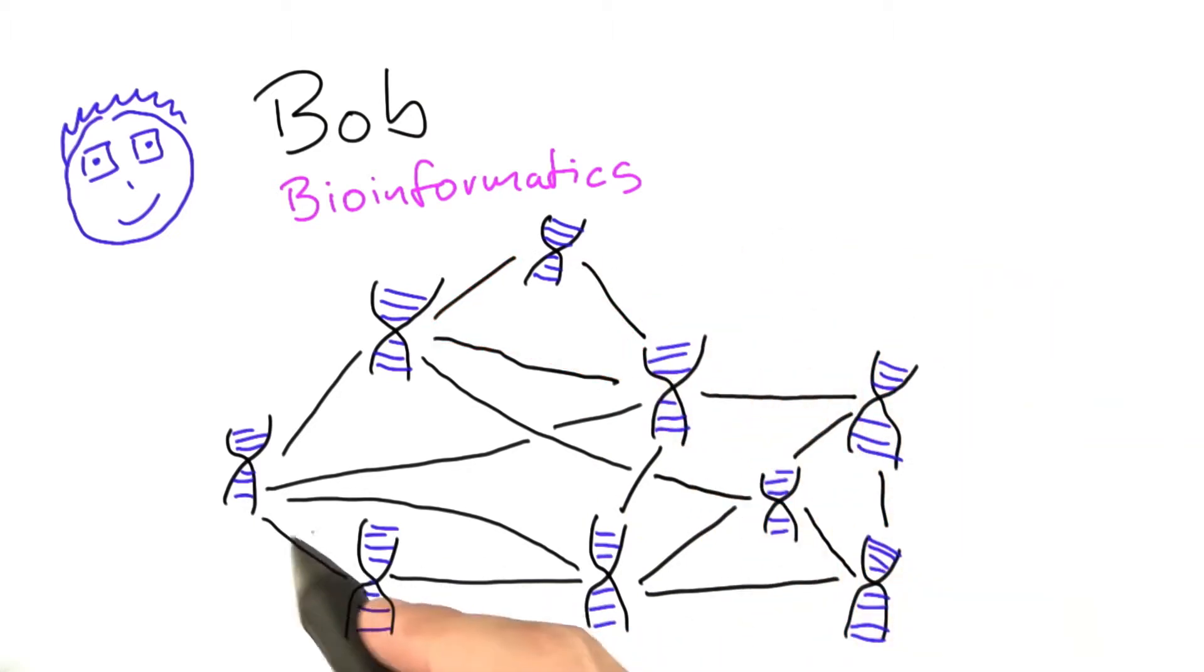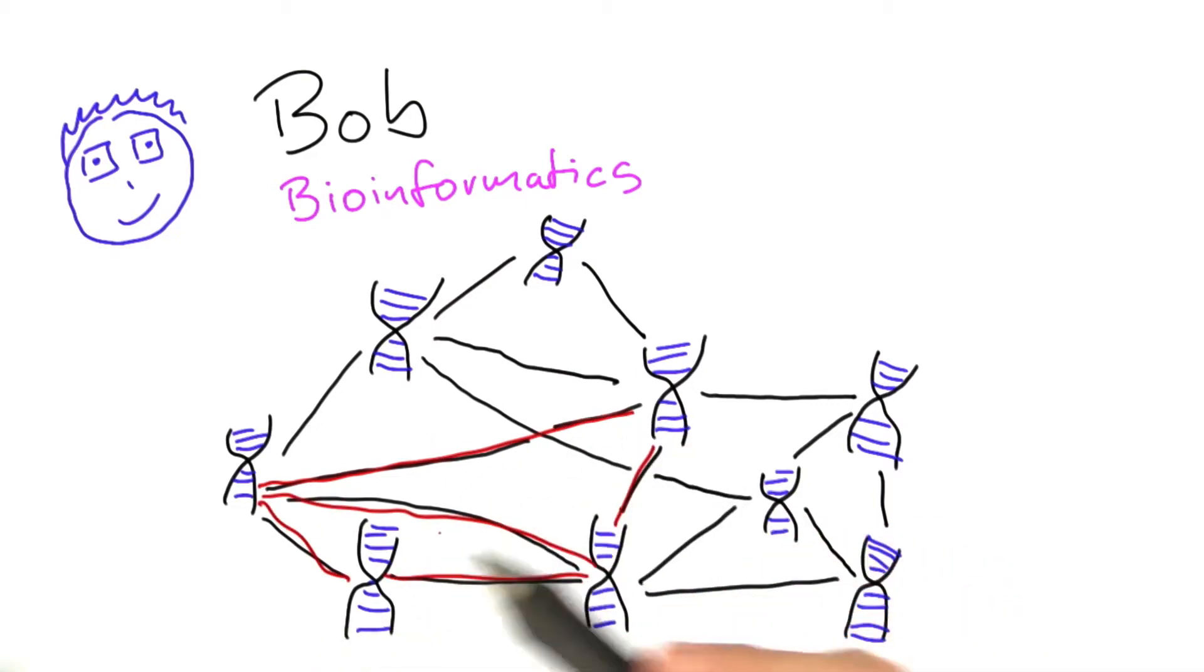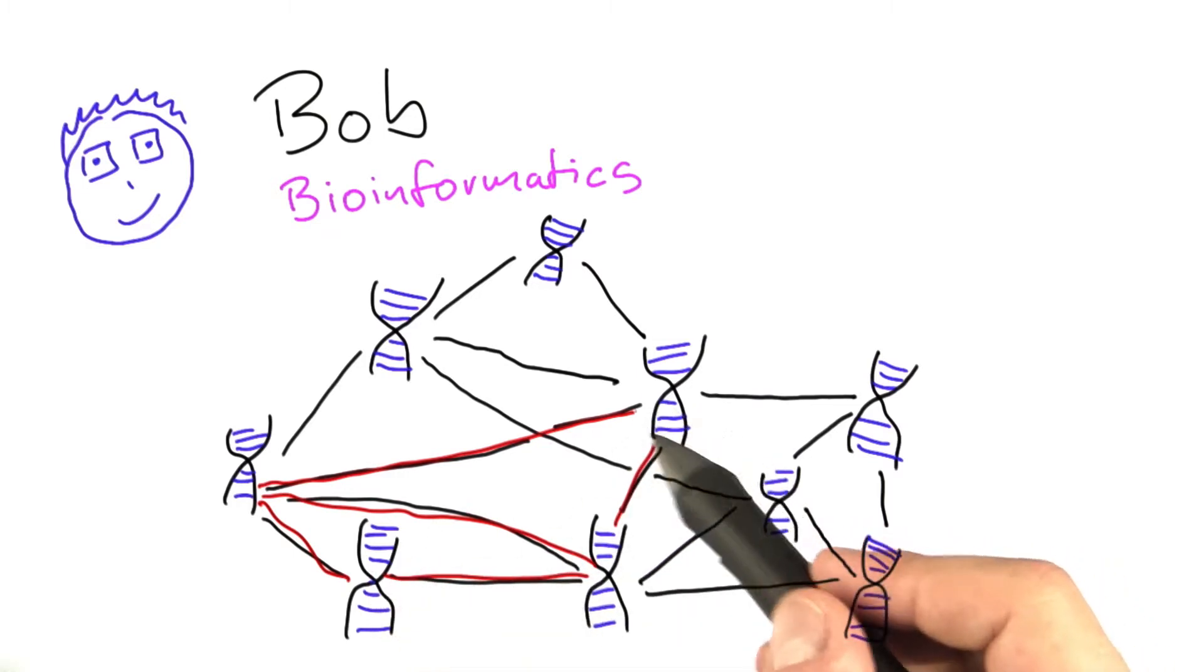What he would not be looking for is, for example, something like this, these four genes here. Most of them are connected to each other, but not every single one of them is connected to every other. So this gene here is not connected to that one.